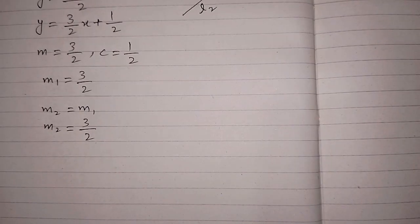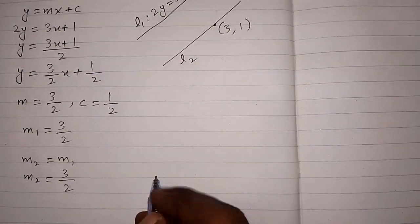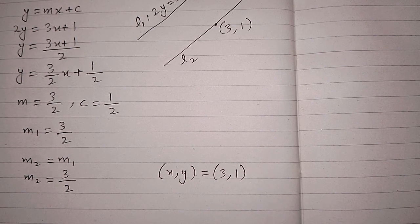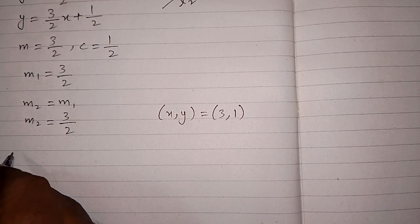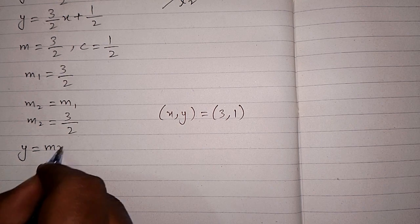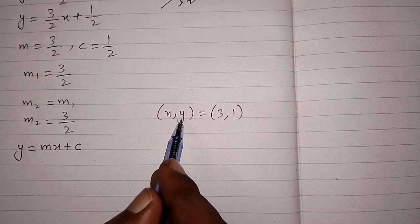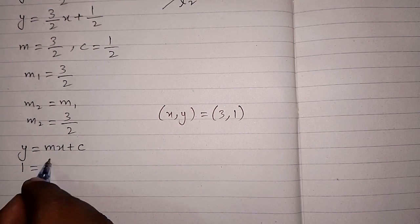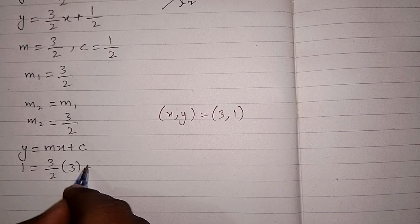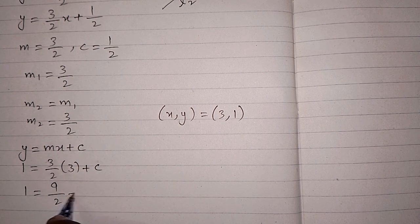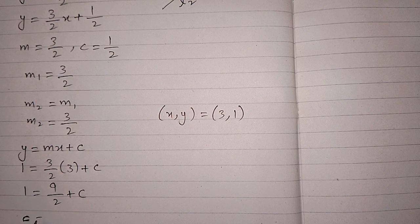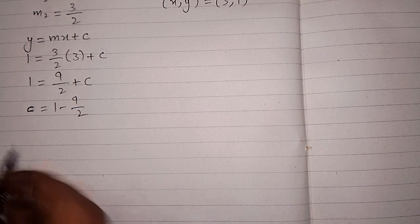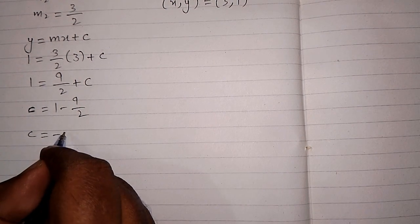Line L2 passes through the point (3, 1), so we take x = 3 and y = 1. Using the standard equation y = mx + c, we substitute y = 1, m = 3/2, and x = 3 to get 1 = 9/2 + c. Therefore c = 1 - 9/2 = -7/2.